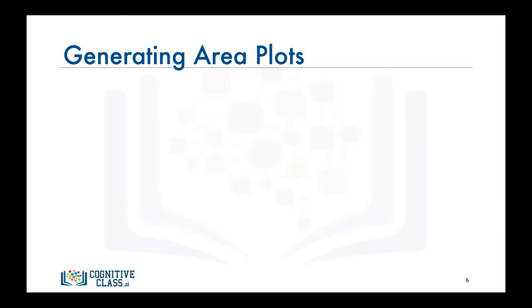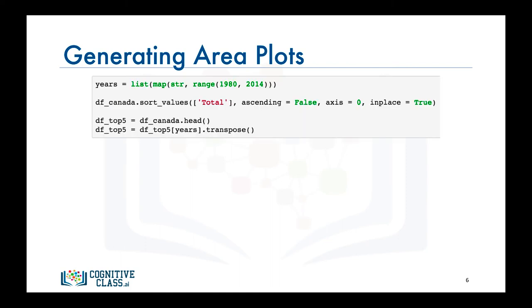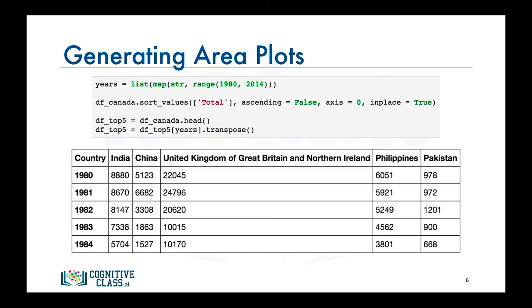After we sort our data frame in descending order of cumulative annual immigration, we create a new data frame of the top five countries and call it DF_top5. We then select only the columns representing the years 1980 to 2013 in order to exclude the total column before applying the transpose method. The resulting data frame is exactly what we want, with five columns where each column represents one of the top five countries and the years being the indices. Now we can go ahead and call the plot function on DF_top5 to generate the area plots.